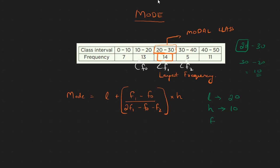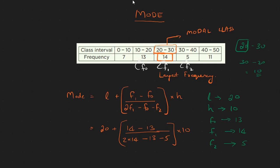Now let's check our values. F0 is equal to 13, F1 is equal to 14, F2 is equal to 5. Now let's substitute these values into the formula. The mode formula is L plus (F1 minus F0) divided by (2 times F1 minus F0 minus F2), multiplied by the class size. L is equal to 20, and the class size is 10.